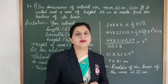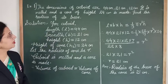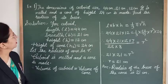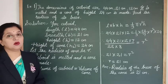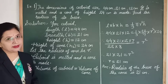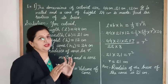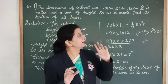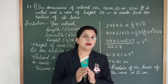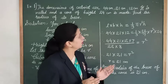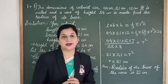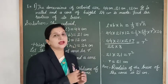Here we have the first question. The dimensions of a cuboid are 44 cm, 21 cm, and 12 cm. It is melted and a cone of height 24 cm is made. Find the radius of its base. In this question, a cuboid with its dimensions is given, and that cuboid is melted to form a cone with height 24 cm. We need to find the base radius of that cone.